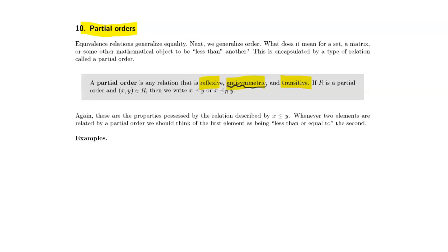If R is a partial order and the pair (x, y) is in R, then we write x is less than or equal to y, or if it's necessary to distinguish the partial order, we'll put a subscript R under it. Sometimes I'll use a simplified symbol if it's clear the relation I'm talking about is not the regular less than or equal to relation. The idea here is that all of these are properties possessed by the relation described by x ≤ y on the integers or the real numbers, so whenever two elements are related by a partial order, we think of the first element as being less than or equal to the second.